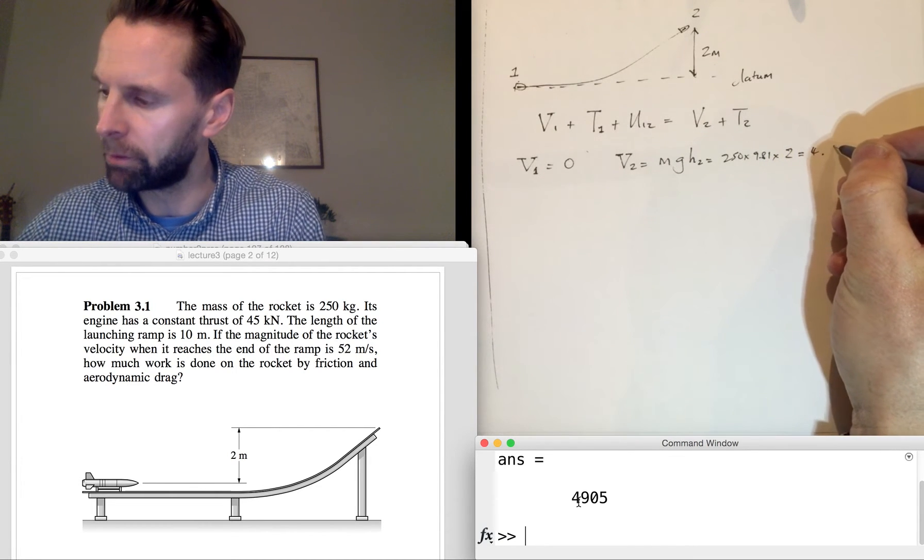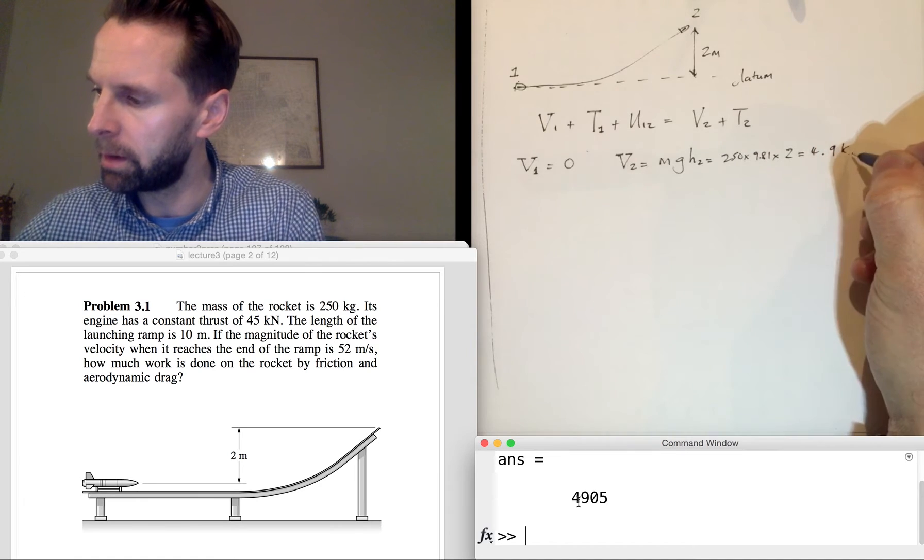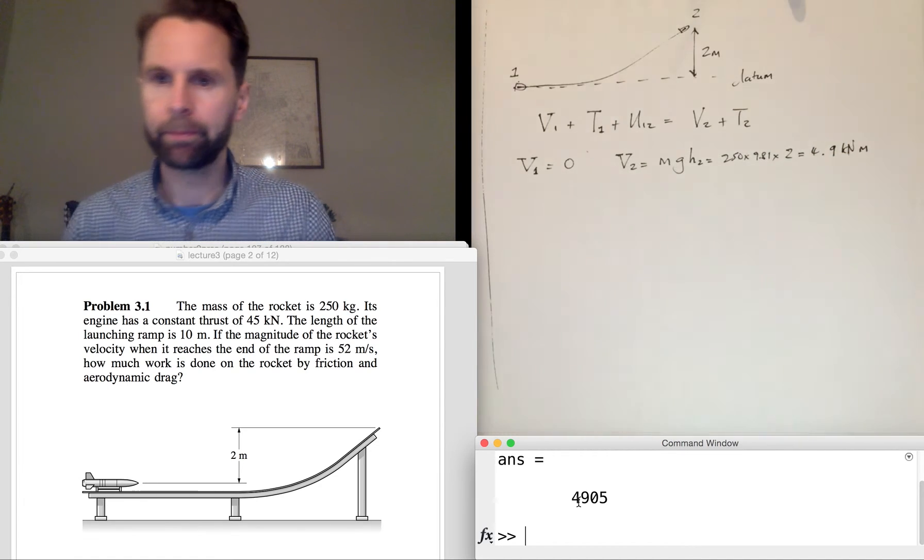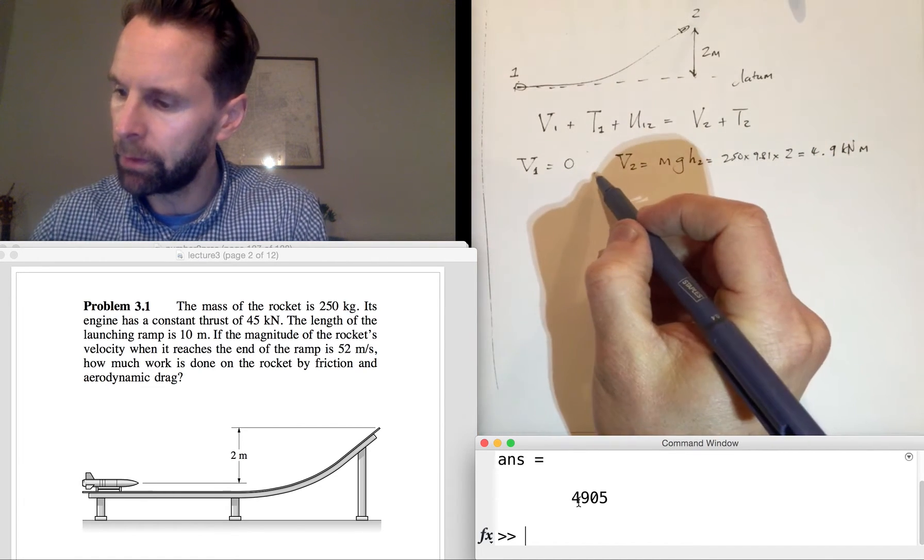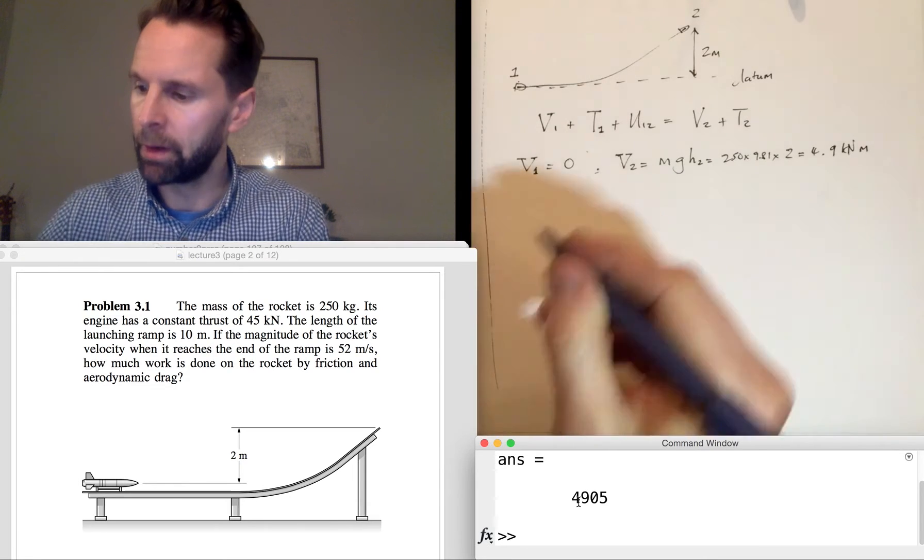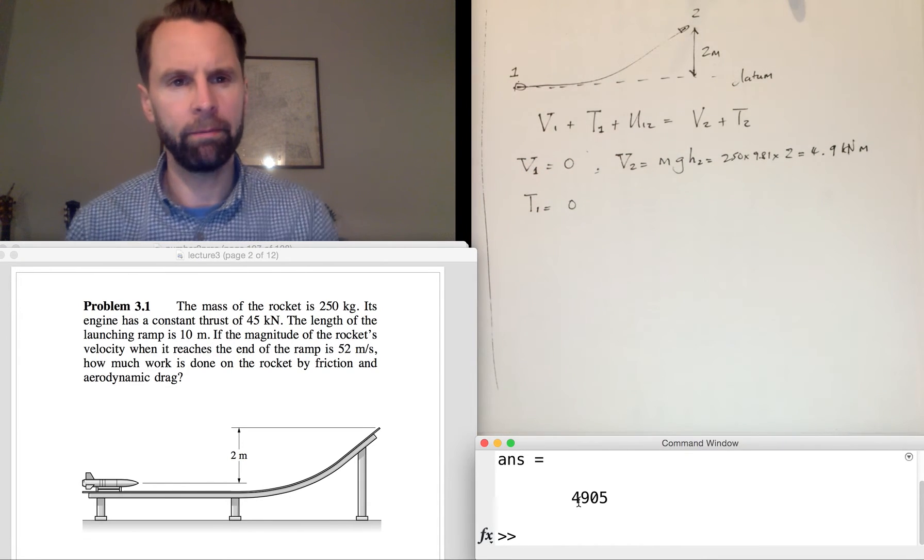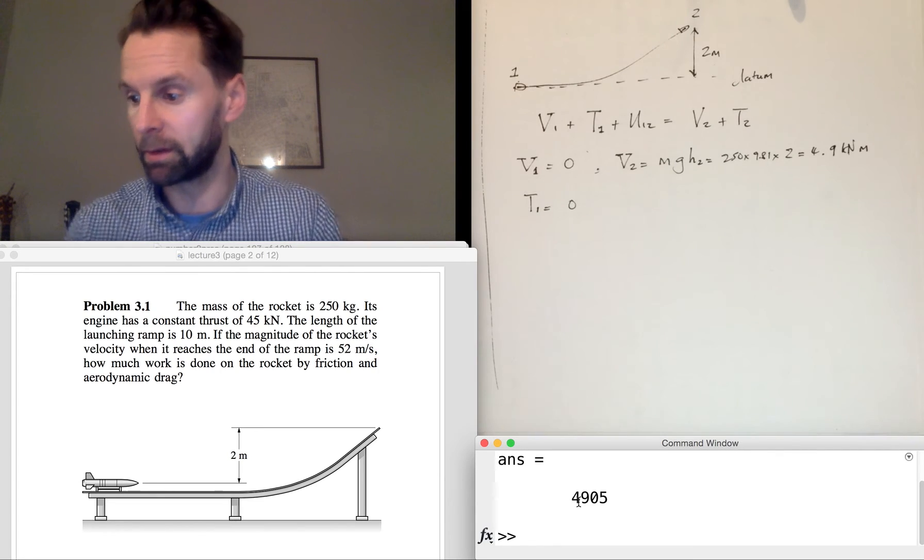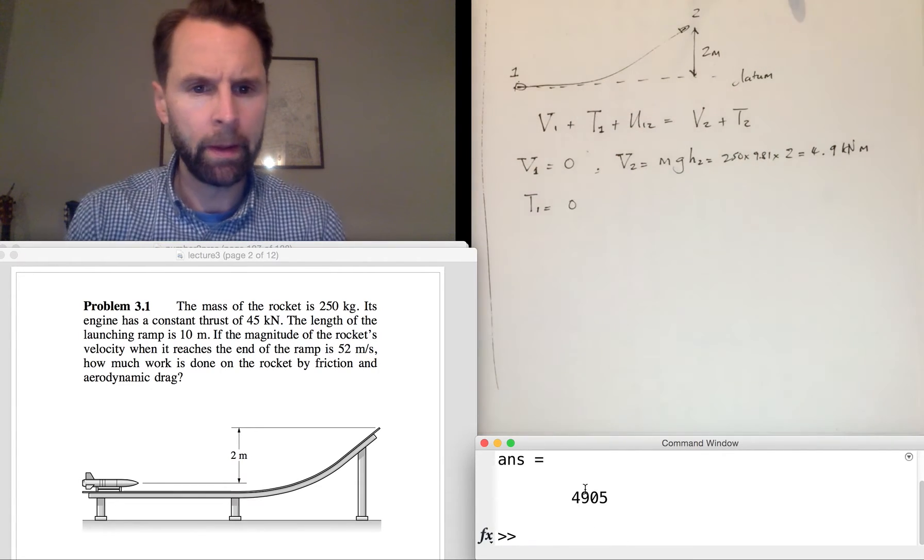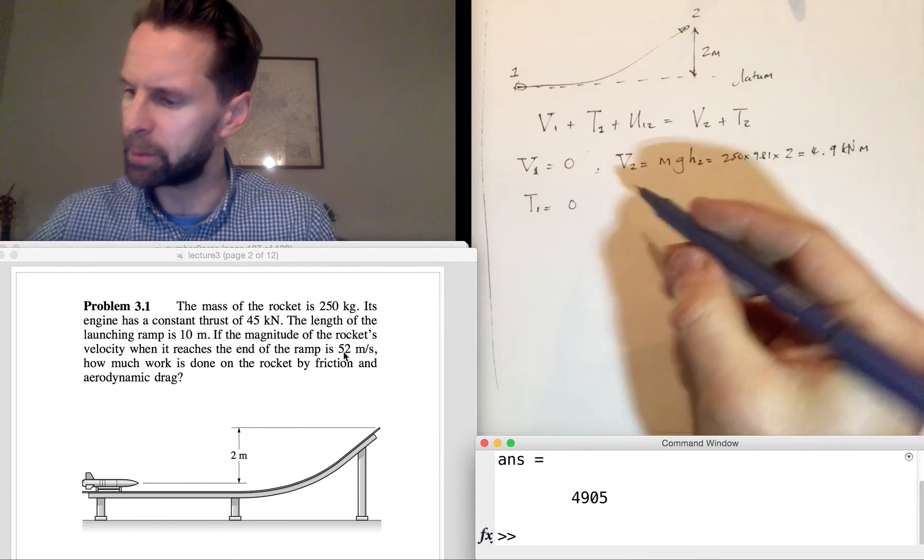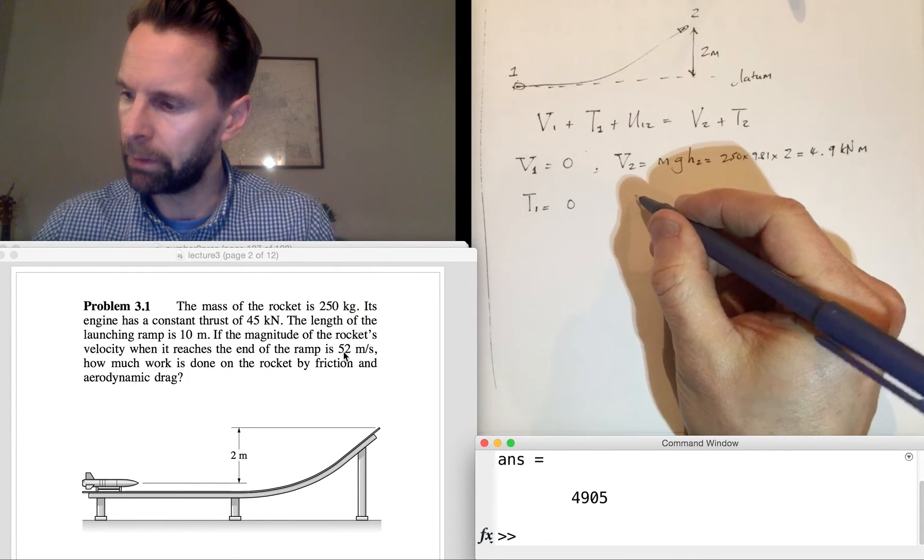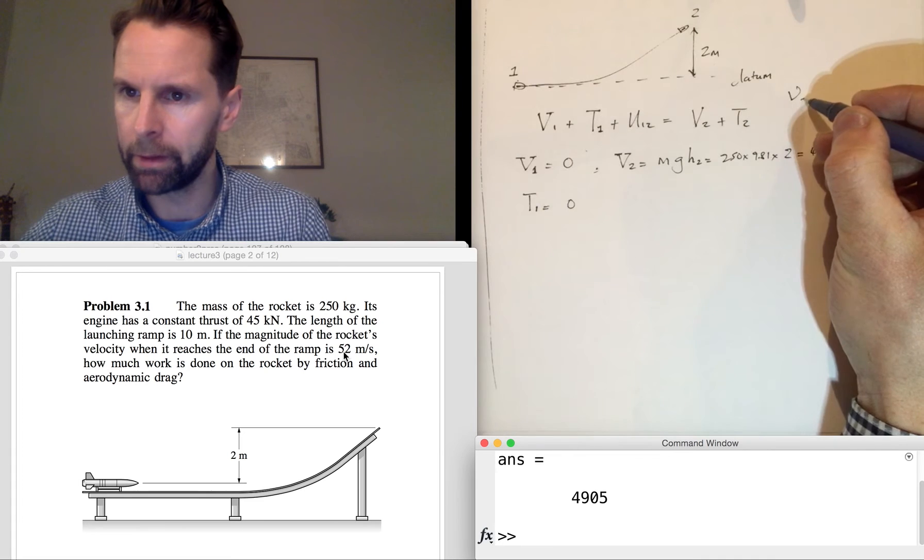So that's V1 and V2 done. Initially it's at rest—it's a rocket we're starting—so then it's going to take off at a different speed. It leaves the ramp at 52 meters per second.